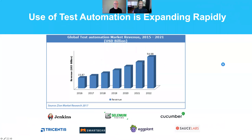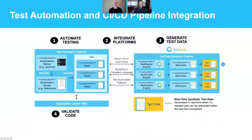The market is going from about $16 billion up to $55 billion. These are the tools being used — the open-source tools like Jenkins, Selenium, and Cucumber, and really good vendors like Tricenda, SmartBear, Eggplant, and Sauce Labs, just to name a few. So Hysel, let's look at GenRocket and how we tie into a CICD pipeline in Jenkins.